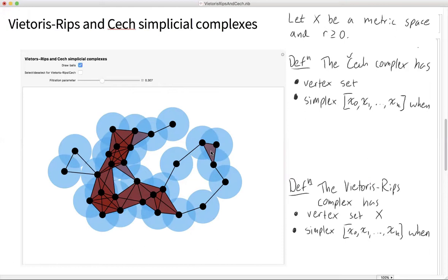Let X be a metric space and r be a scale parameter bigger than zero. So the Čech complex has vertex set X. And it has a simplex on vertices x_0, x_1, all the way up through x_k. So those are just the names of my vertices. It has a k simplex when the intersection of the corresponding balls around these points x_i of radius r over 2 is not empty.